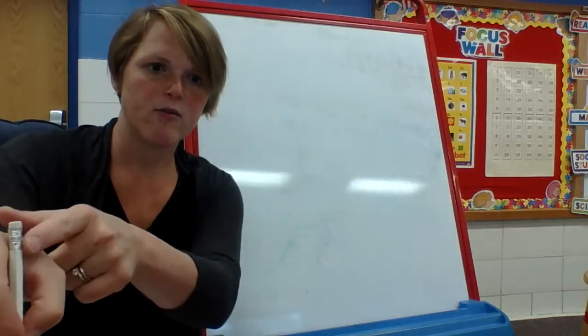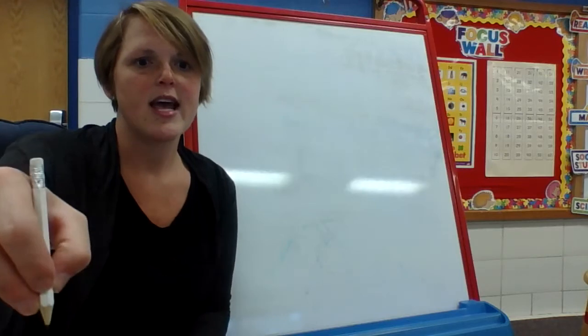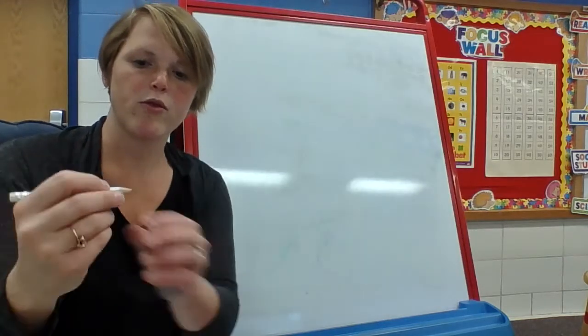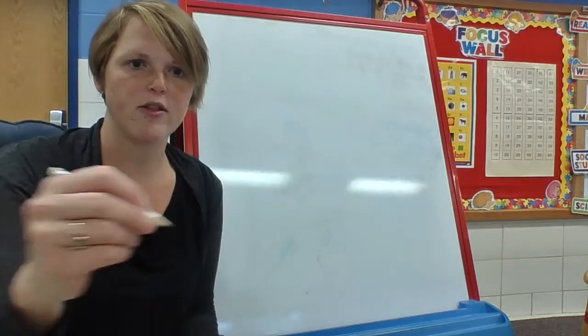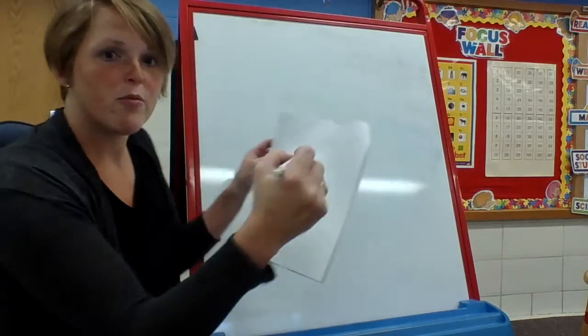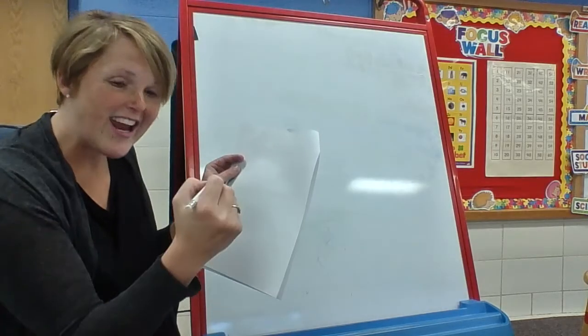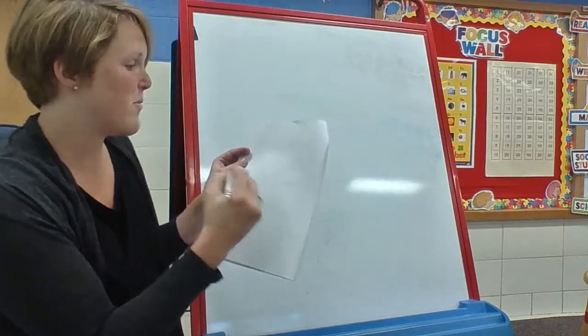Your pencil should be laying down right in the middle of your hand, and you should be writing with the rest of your fingers underneath. Then you're going to put your hand and your pencil on your paper.